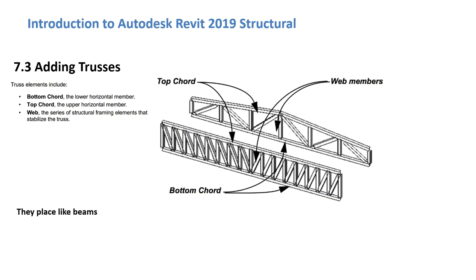A truss can be added to a project using the same basic method as placing a beam, so just think of these things in the way that beams work. Trusses are typically comprised of one or more triangular sections. This portion is called the web members, and these sections are constructed with structural members whose ends are connected at joints, which are referred to as nodes.